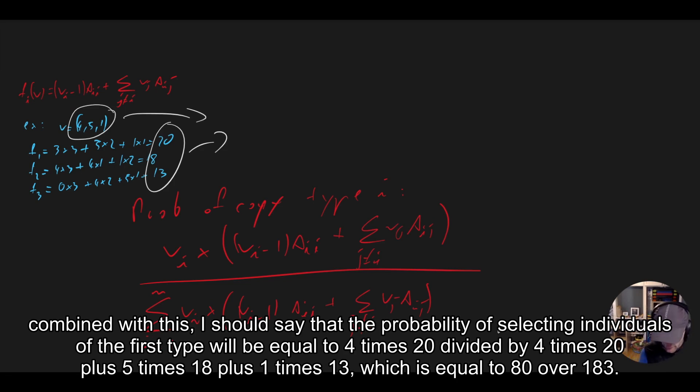that the probability of selecting individuals of the first type will be equal to 4 times 20 divided by 4 times 20, plus 5 times 18, plus 1 times 13,